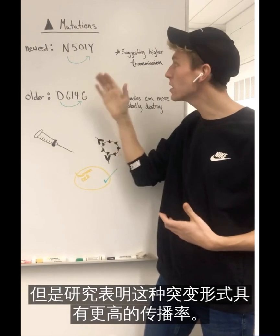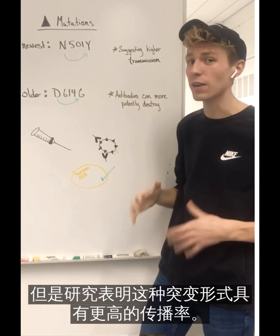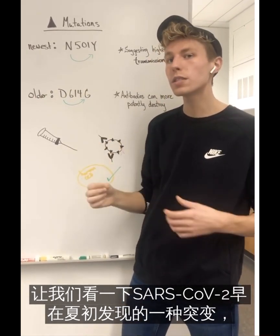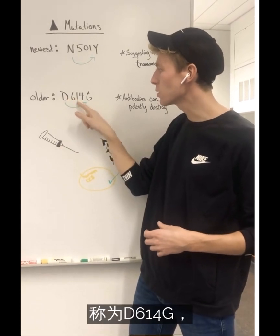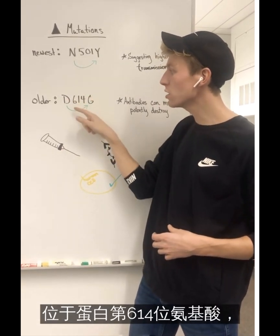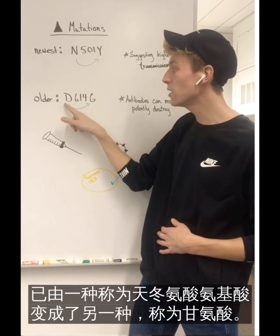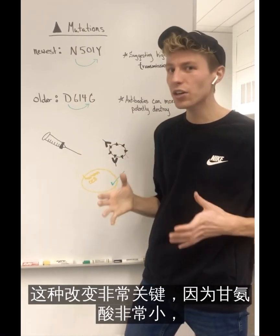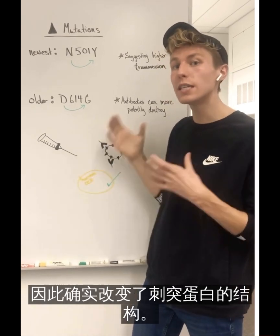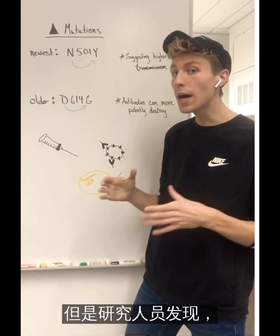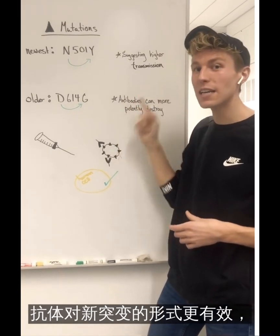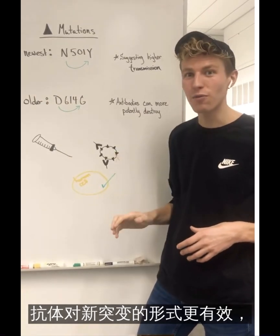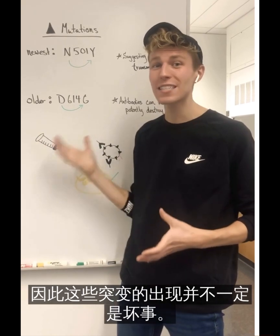What current research is suggesting is that this mutated form does have a higher rate of transmission. But if we look at an older mutation of SARS-CoV-2, one discovered back in early summer known as D614G — at position 614 on the spike protein instructions, one amino acid known as aspartic acid has been changed to another amino acid known as glycine. Glycine is super small, so this did change the structure of the spike protein. But researchers found that antibodies against the non-mutated form were actually able to destroy the mutated form far better than the non-mutated form, showing us that these mutations aren't necessarily a bad thing.